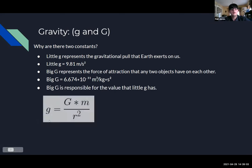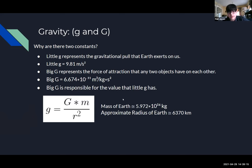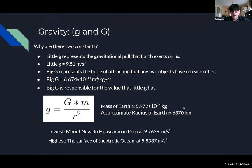Big G is responsible for the value of little g through the equation: little g equals big G times the mass of an object divided by its radius squared. Plugging in Earth's mass of 5.972 times 10 to the 24 kilograms and an average radius of 6,370 kilometers confirms little g as 9.81 meters per second squared. Since Earth is not perfectly round, gravity varies — the lowest is at Nevado Huascarán in Peru at 9.7639, and the highest at the Arctic Ocean surface at 9.8337 meters per second squared.